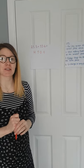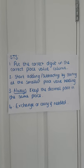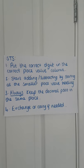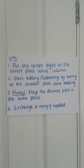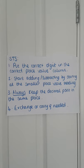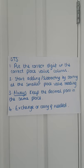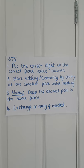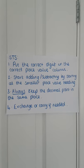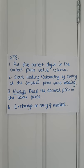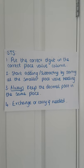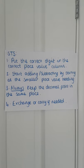So let's start with the steps to success. What you need to do is put the correct digit in the correct place value column. You need to start adding and subtracting by starting at the smallest place value heading — I'll explain what that means in a minute. You always keep the decimal point in the same place, which is what we've told you all year, so you should be a pro at this by now, and then use exchange or carry if needed.